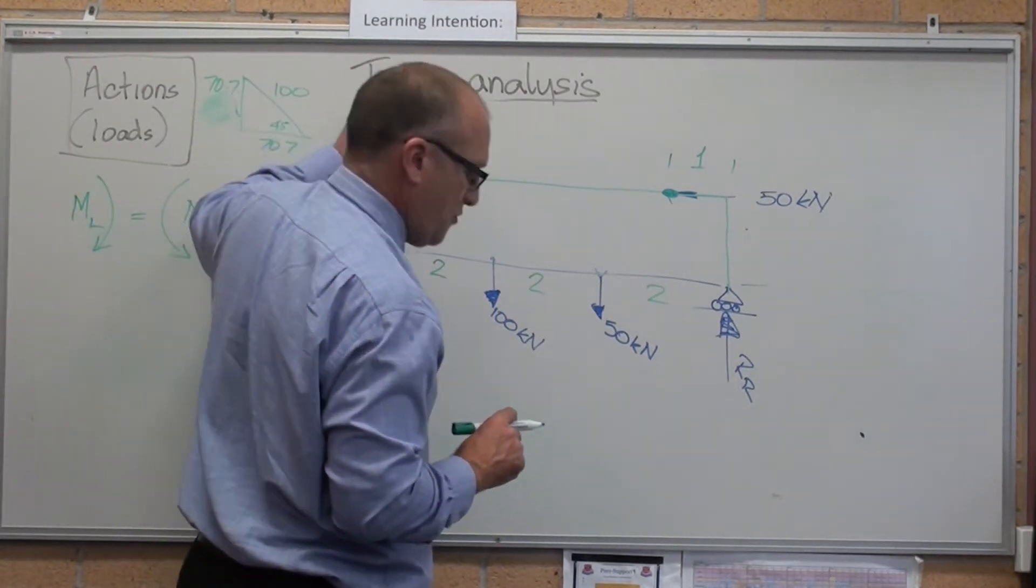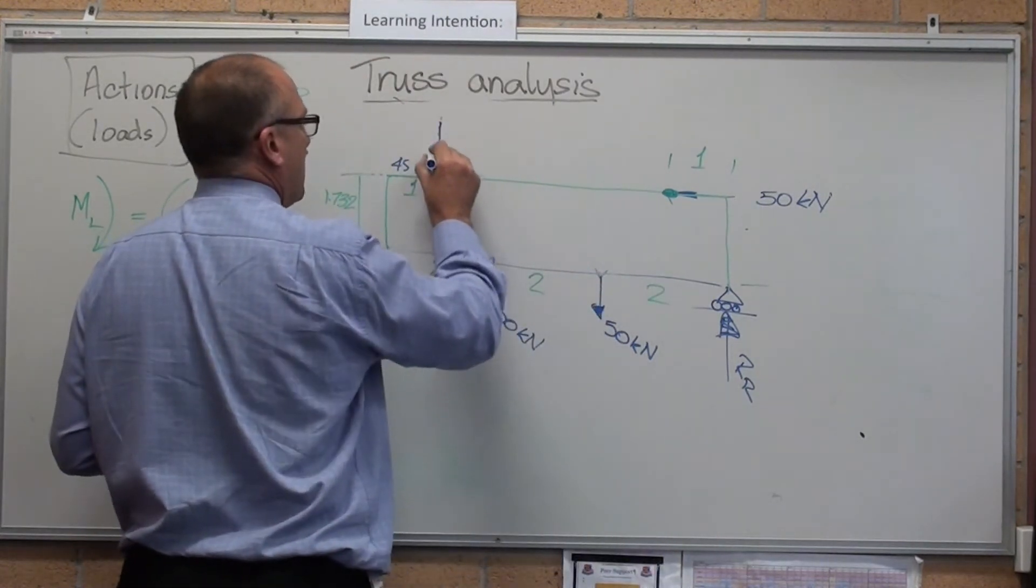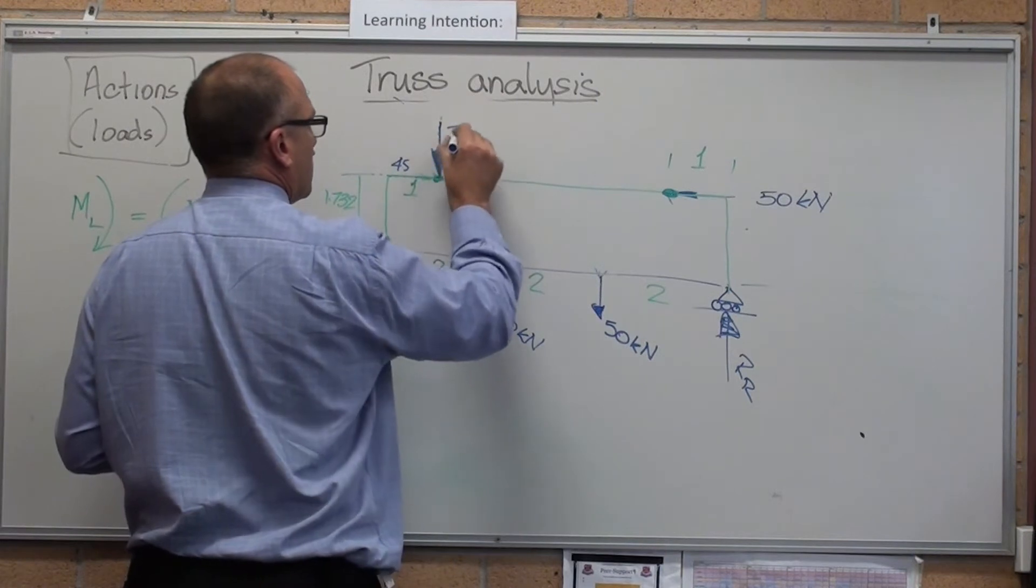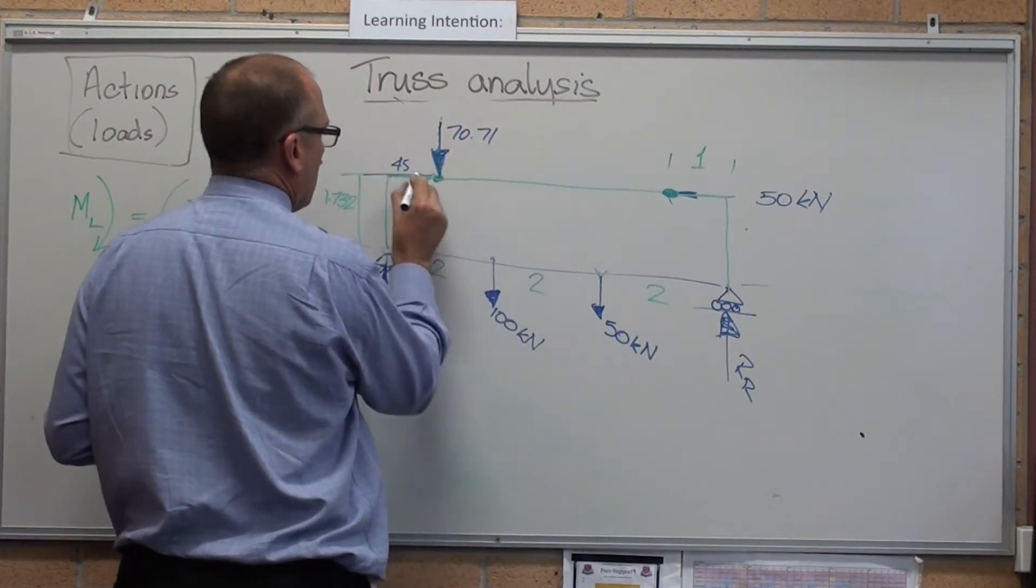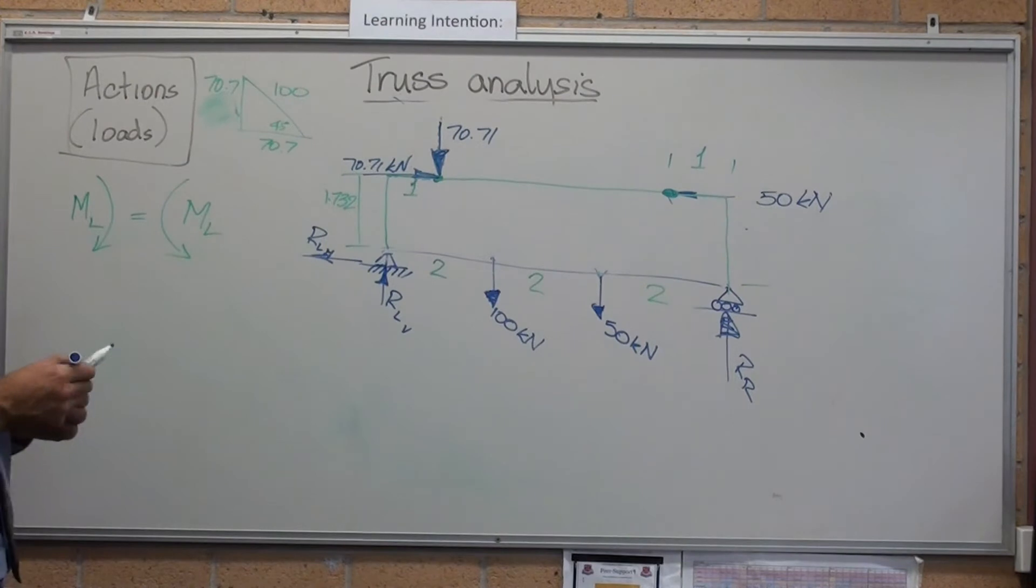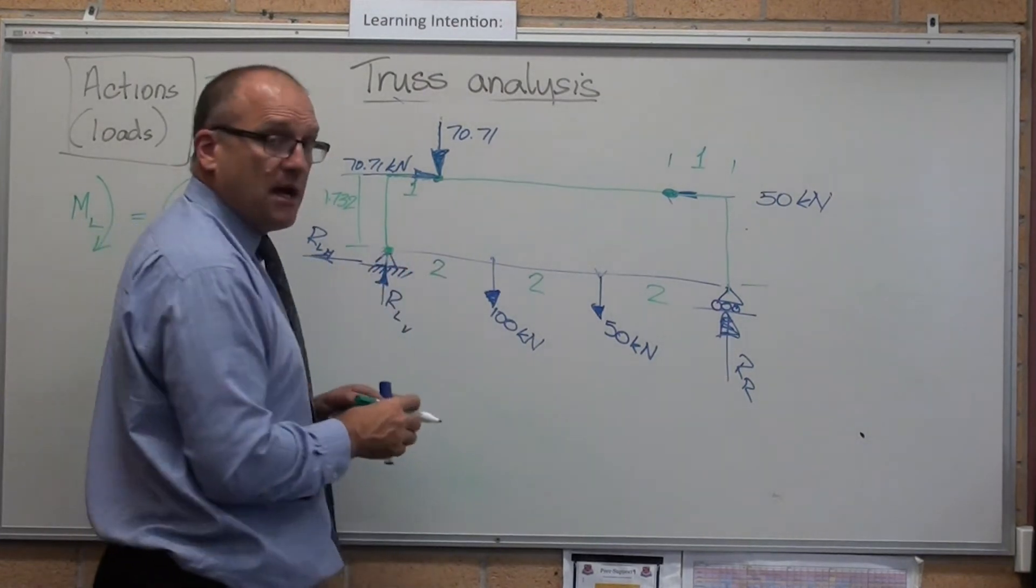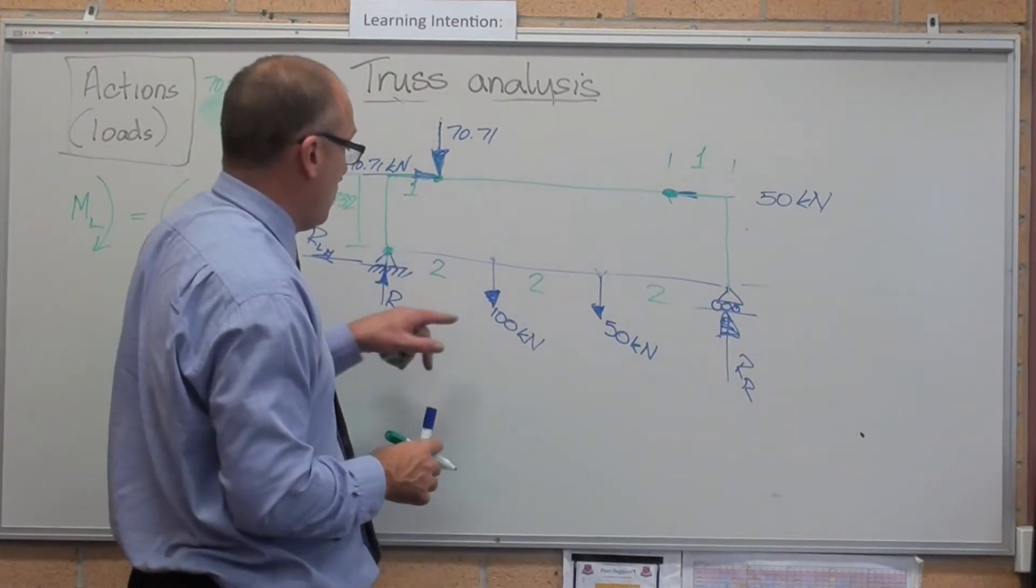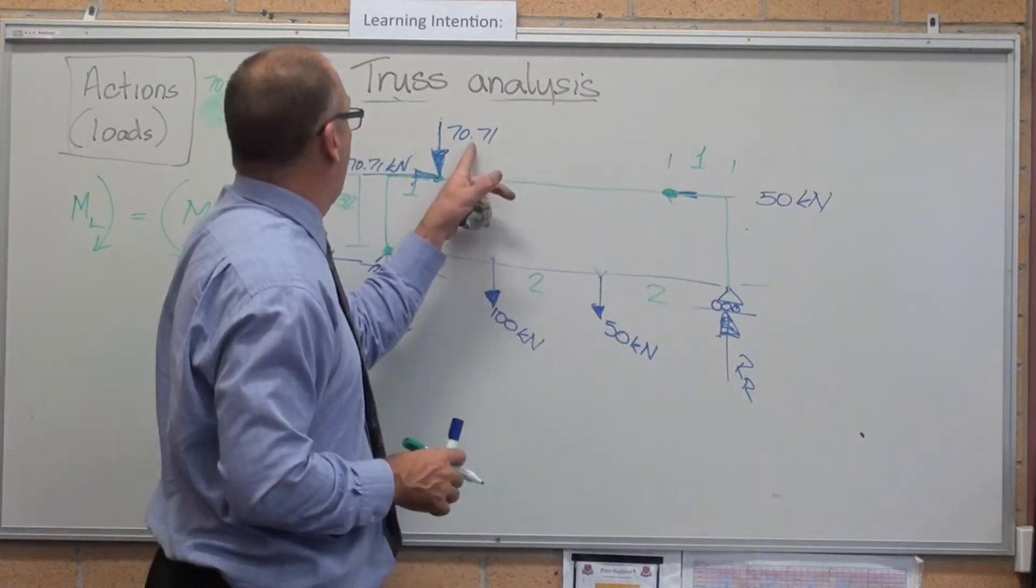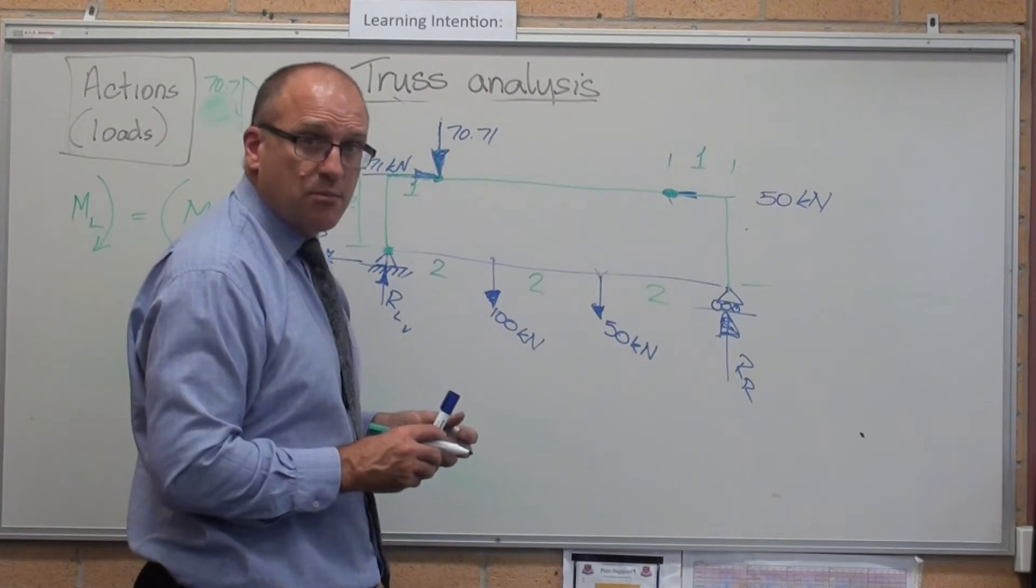Let me now just remove that. Say my 45 degrees now is now 70.71 pulling down, 70.71 pushing across. I've got everything I need to easily solve that problem now. Taking moments around here. Let me make sure I don't make a dumb mistake. 1, 2, 3, 4, 5, 6 forces. At the end I'll have 6 forces in my calculations.